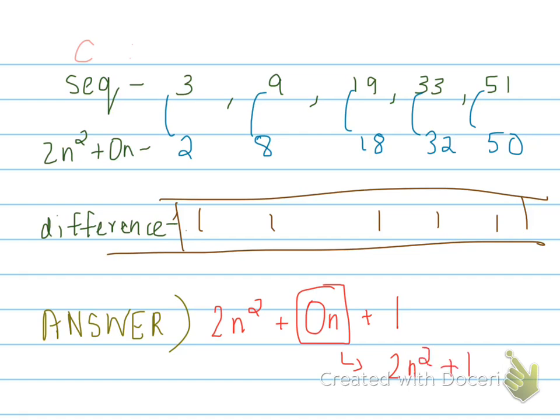To reconfirm the answer, you can substitute values. For instance, 2 × 1² + 1 = 3, which matches the first term. For the second term: 2 × 2² + 1 = 8 + 1 = 9, which also matches. You can substitute each position term to verify your answer is correct.